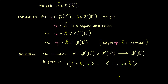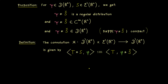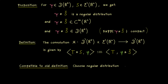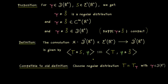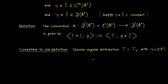Why this is the correct definition becomes clear when we compare to the old definition. We can simply show that the new definition is compatible with the old one. This means if t is a regular distribution represented by a test function psi, and we put this t into our new definition, we should get out the same result as with the old definition. Let's calculate what we get.